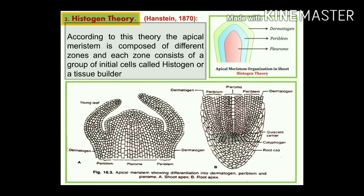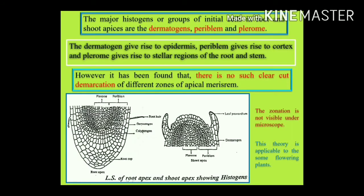Dermatogen is the outermost single layer of cells. These cells form a single-layered epidermis by anticlinal division. Periblem is situated just below the dermatogen and it forms the cortex, that is hypodermis, general cortex, and endodermis. Pleurome is the innermost region, where stele formation takes place by division of these cells, including formation of pericycle, vascular bundles, pith, and medullary rays.